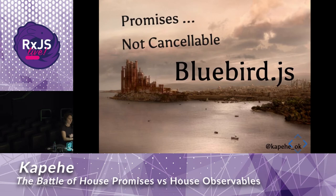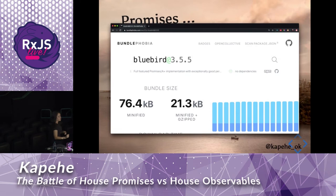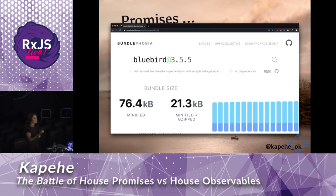There's bluebird.js — a third-party library that helps us to cancel promises. But to be fair, let's visit bundlephobia — how many kilobytes are we adding when we add bluebird? 76.4 kilobytes. That's almost double what the RxJS library was. So the zero kilobytes advantage from earlier is kind of irrelevant now.